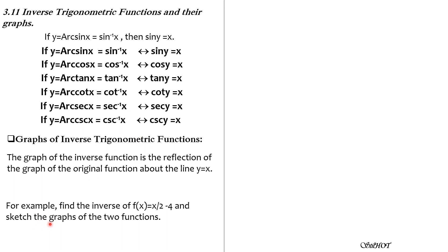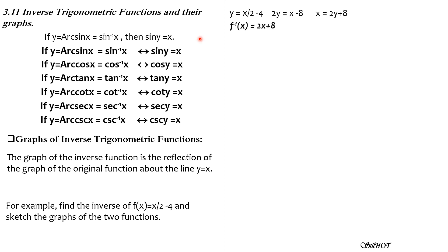For example, f of x equals x over 2 minus 4. To find its inverse, let y equal x over 2 minus 4, multiply everything by 2 to get 2y equals x minus 8, so x equals 2y plus 8. Then interchange x and y, giving the inverse function y equals 2x plus 8.